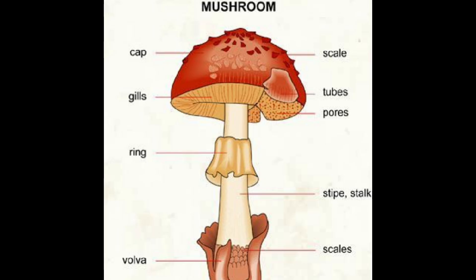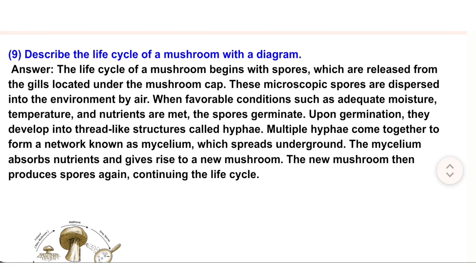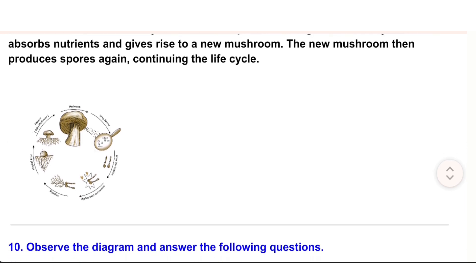8. Draw a diagram of a mushroom and label its various parts. 9. Describe the life cycle of a mushroom with a diagram. Answer: The life cycle of a mushroom begins with spores, which are released from the gills located under the mushroom cap. These microscopic spores are dispersed into the environment by air. When favorable conditions such as adequate moisture, temperature, and nutrients are met, the spores germinate and develop into thread-like structures called hyphae. Multiple hyphae come together to form a network known as mycelium, which spreads underground. The mycelium absorbs nutrients and gives rise to a new mushroom, which then produces spores again, continuing the life cycle.